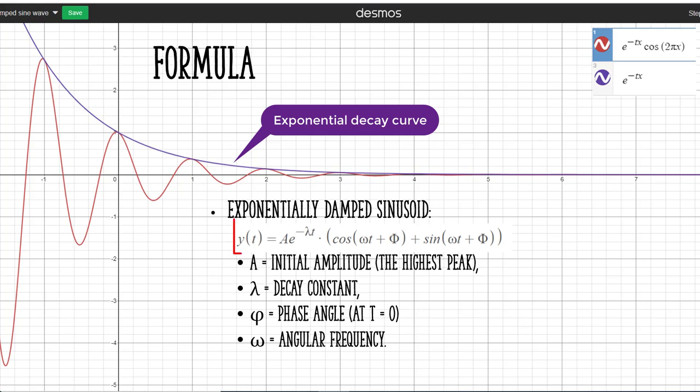This is the general equation for an exponentially damped sinusoid. A is the initial amplitude, that's the highest peak. Lambda is the decay constant. Phi is the phase angle at t equals zero. And omega is the angular frequency.